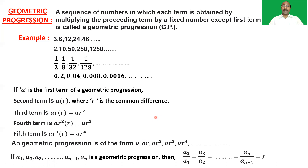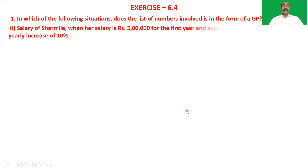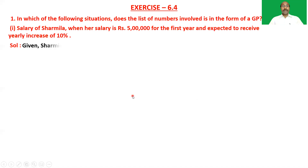Let's solve some problems from exercise 6.4. The first question asks: in which of the following situations does the list of numbers involved form a GP? The first situation is the salary of Shirmila, whose salary is 5 lakh rupees for the first year and is expected to receive a yearly increase of 10 percent. We have to check whether the numbers involved are in GP or not.